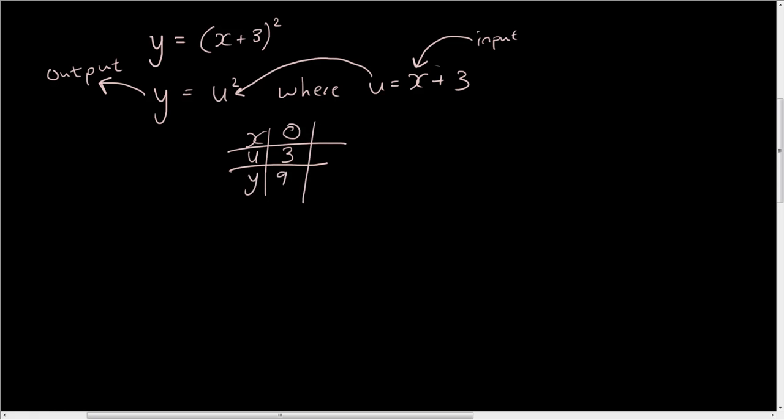Now let's try another number — let's put in 1 for x. 1 plus 3 is 4, so u is 4. 4 squared is 16. So this is our table of values. Now let's talk about how the chain rule works.